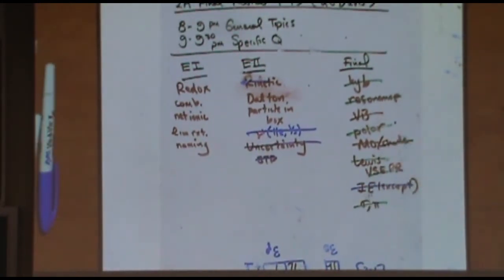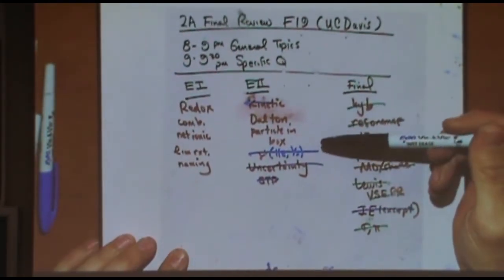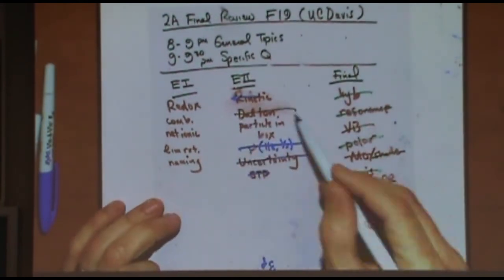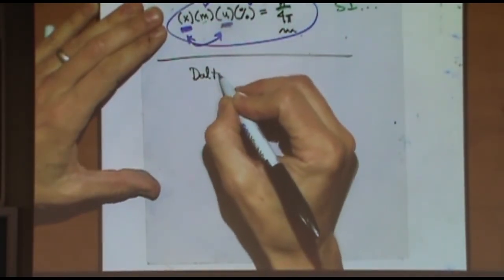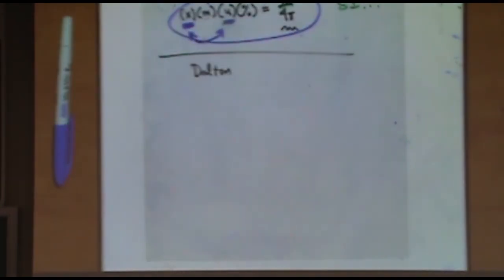One last thing. Would you rather see particle in a box or Dalton? Dalton, okay. Choose your own adventure, right? Dalton, it could be set up a couple different ways. This is a mixture of gases. If you see a mixture of gases, it's probably a Dalton's Law. So, the mixture plus something like a partial pressure or mentioning of pressures, pins you to Dalton's Law.